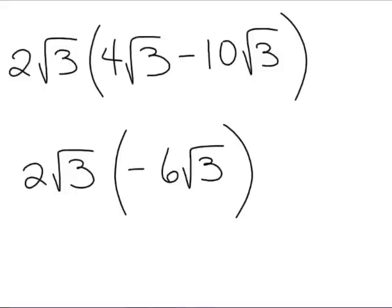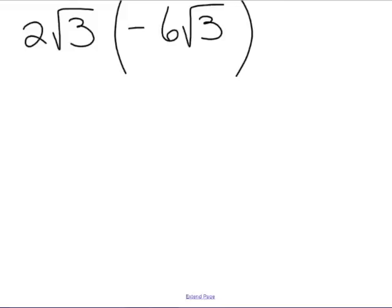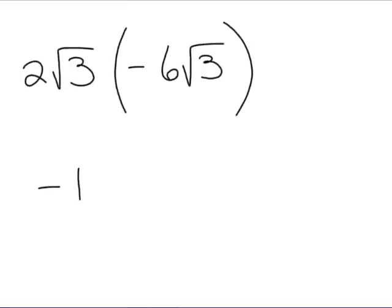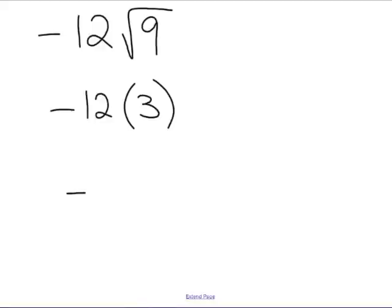And now 2 times negative 6, that gives us negative 12. And root 3 times root 3 is root 9. And now I'll simplify root 9. We have negative 12 times root 9 is 3. And finally, negative 12 times 3 is just negative 36. And that is the answer.